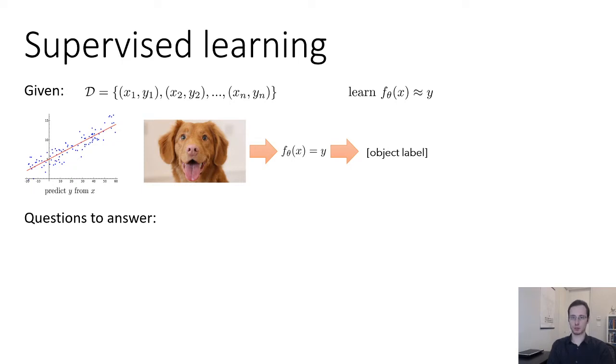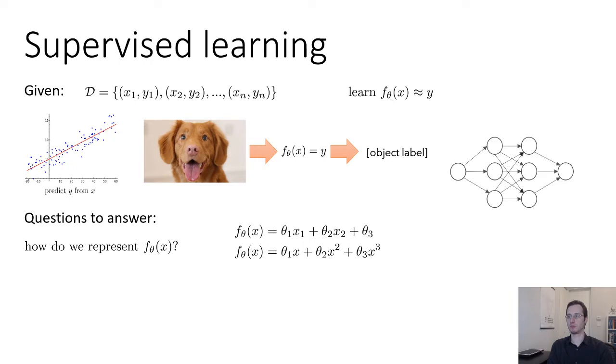Now, there are a number of questions that we have to answer to actually instantiate a supervised learning method. We have to choose how to represent f_theta of x. So remember, in machine learning, this f_theta is just a program. It's a program that reads in x and outputs a guess at y. So we have to choose what kind of program it will be and how the parameters theta will enter into that program. It could be something as simple as a linear equation. This would be the case, for example, for linear regression. It could be some polynomial regression function, or it could be something more complex, like a neural network, which is what we'll study in this course.